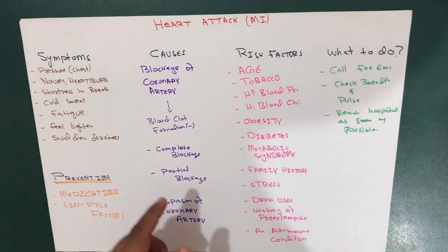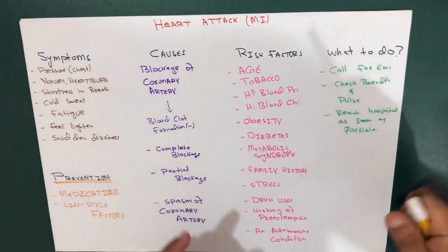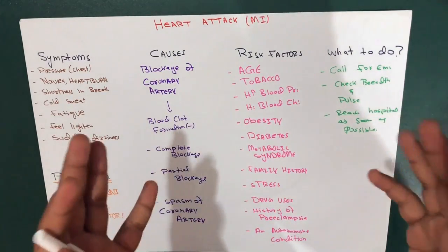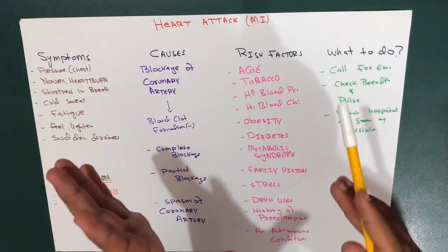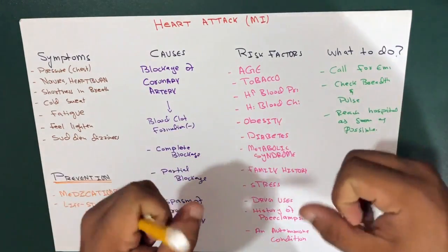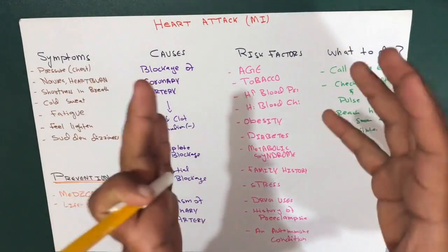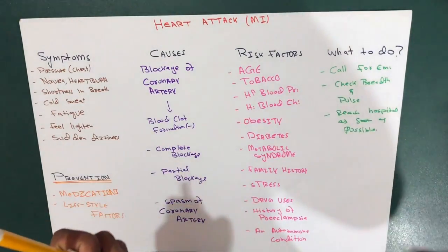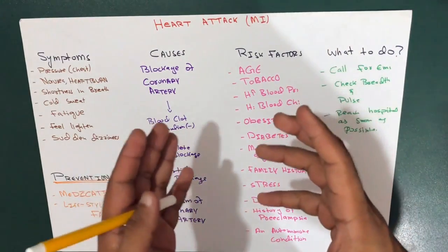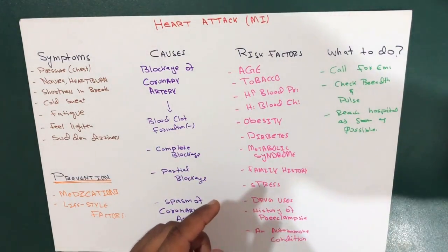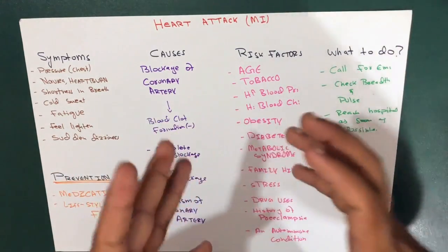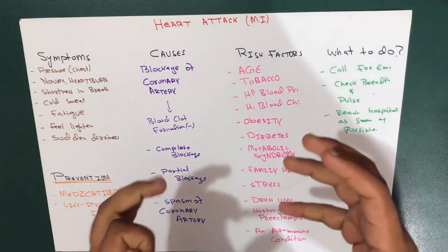Now let's talk about the causes. A heart attack occurs when one or more coronary arteries become blocked. Over time, a coronary artery can narrow from the buildup of substances including cholesterol. This condition is known as coronary artery disease, which most commonly causes heart attacks.